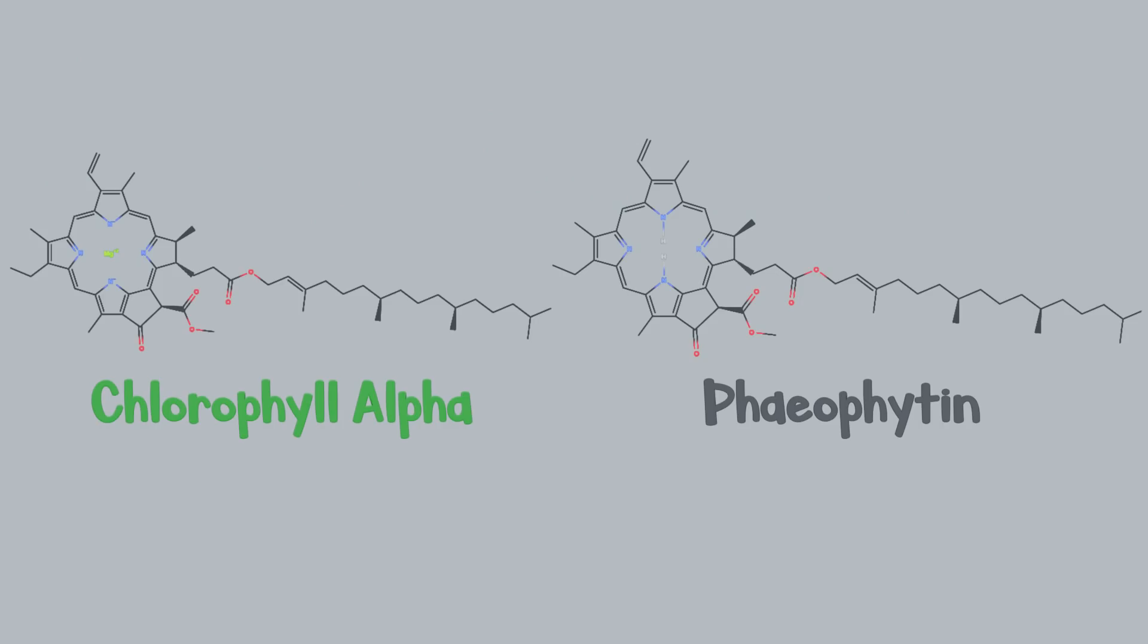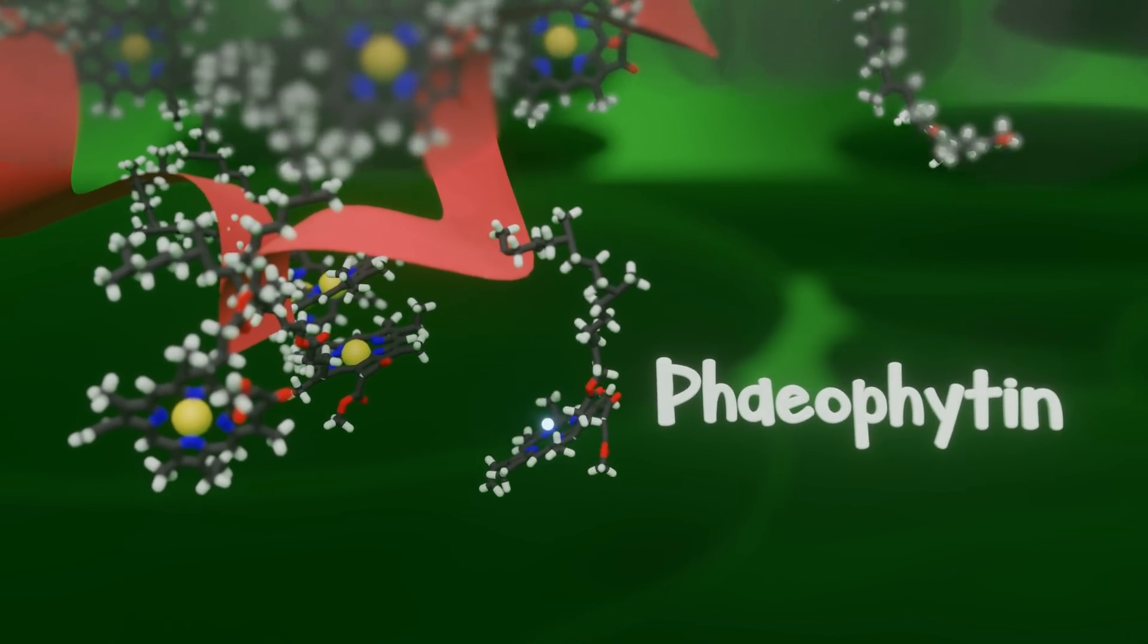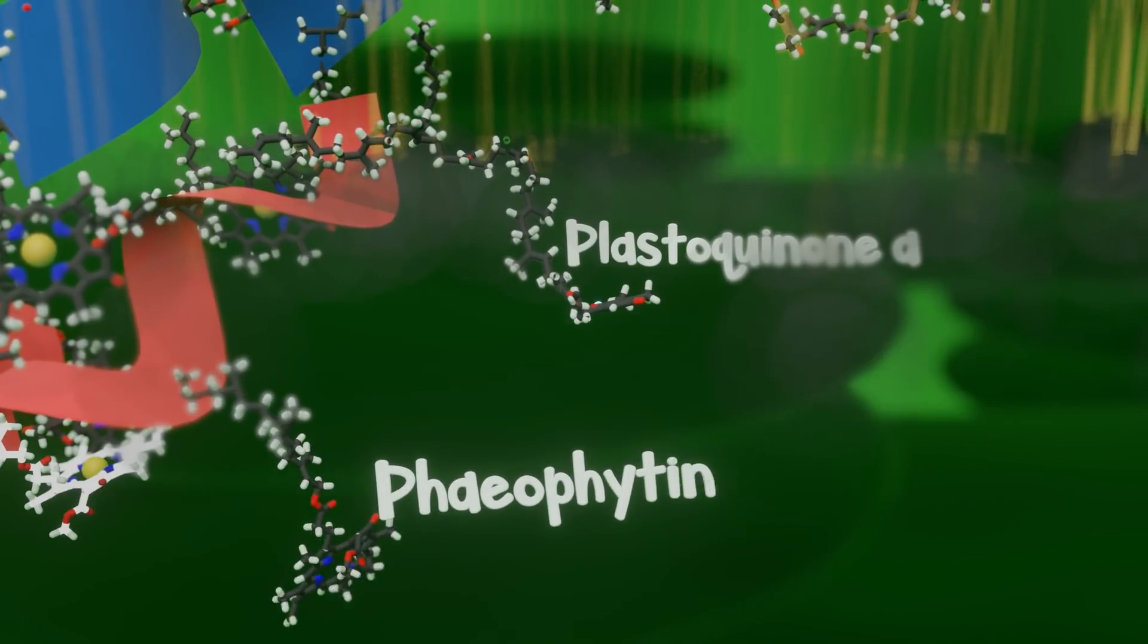This is a chlorophyll molecule, but instead of a magnesium, it has two protons in its center. After an electron is passed to the pheophyton, it is then passed to plastiquinone A, which, after collecting two electrons, passes these to plastiquinone B.